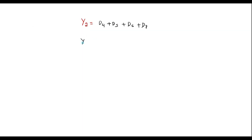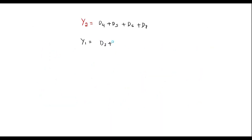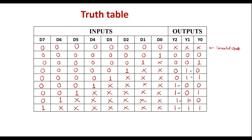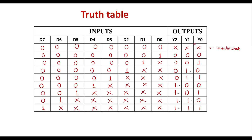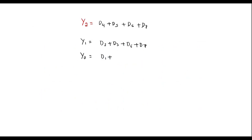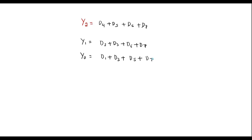Similarly, Y1 is high for D2, D3, D6, and D7, so: Y1 = D2 + D3 + D6 + D7. Then for Y0, it is 1 for D1, D3, D5, and D7, so: Y0 = D1 + D3 + D5 + D7. These are the boolean expressions for the 8-to-3 line priority encoder.